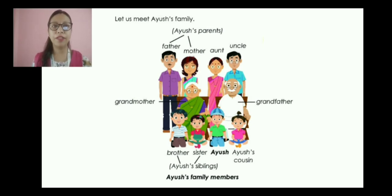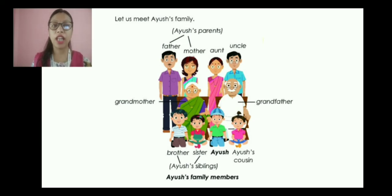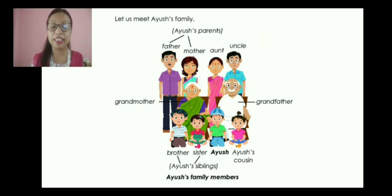Then we have talked about the family members — who are the family members in a joint family. Here we have Ayush's family. Ayush is the one sitting with a green t-shirt. Ayush has his grandparents, that is his grandmother and grandfather, then his parents — mother and father. He has aunt and uncle, and brother and sister whom he calls siblings because they are his own brother and sister, and therefore they are called siblings.